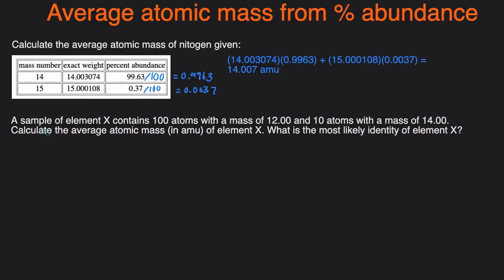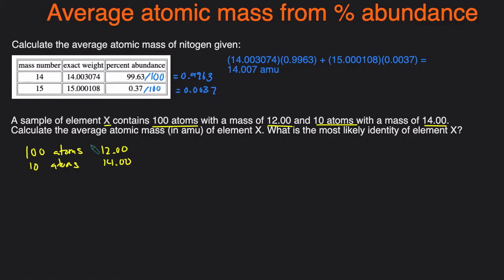The last example says: a sample of element X contains 100 atoms with a mass of 12.00 and 10 atoms with a mass of 14.00. We need to calculate the average atomic mass and determine the most likely identity of element X. We already have the exact weights — 12 and 14. To find the percent abundance, take the count of one isotope divided by the total. For the isotope of mass 12: 100 divided by 110 total atoms.